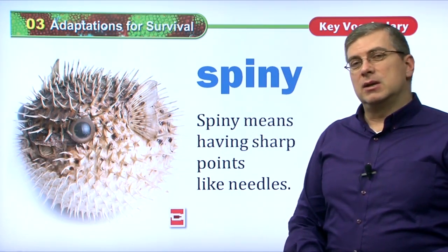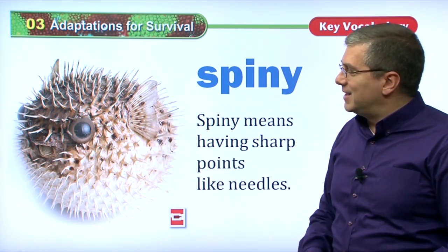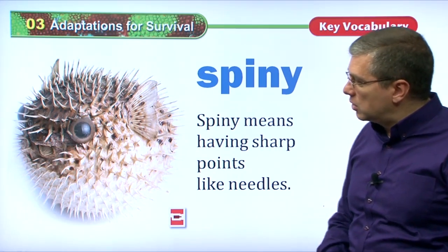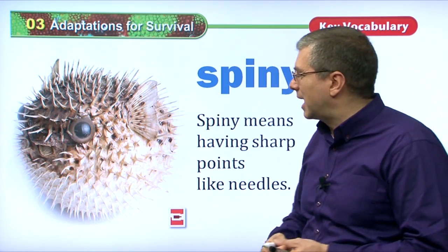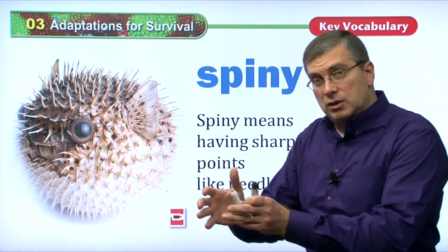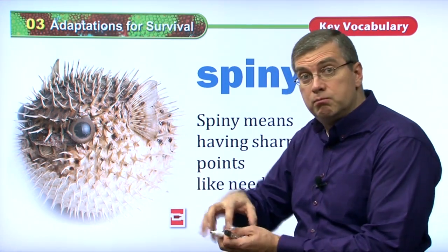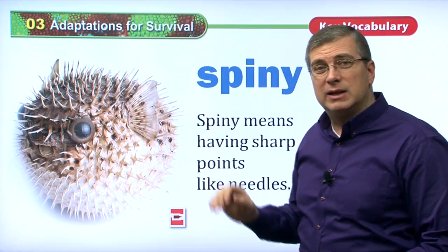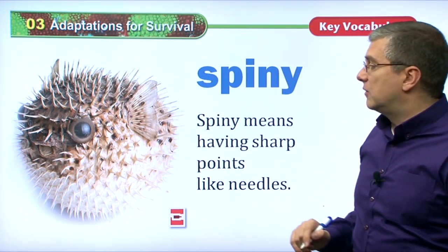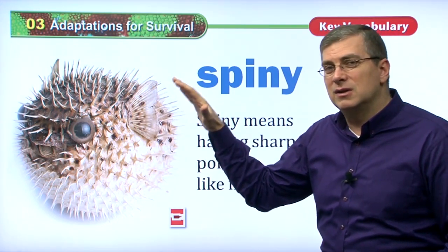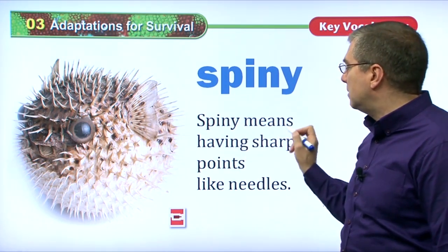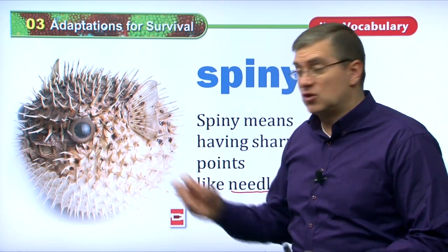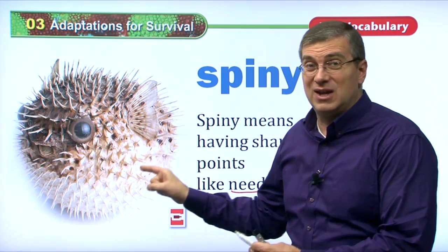Spiny is an adjective we can use to describe animals, and this is another type of adaptation. Here's a puffer fish — it looks really cute with big eyes and a small mouth. Usually they look like a fat fish, but if they get scared, they blow up and all the little spines that are normally flat on their bodies start to stick up. If you touch that — ow! It's like touching a bunch of pins and needles. Spiny means having sharp points like needles. That's obviously a very good adaptation for this fish — it protects itself and nobody wants to touch it.